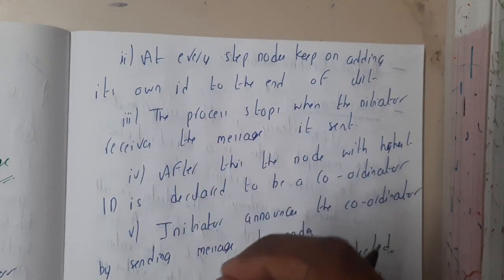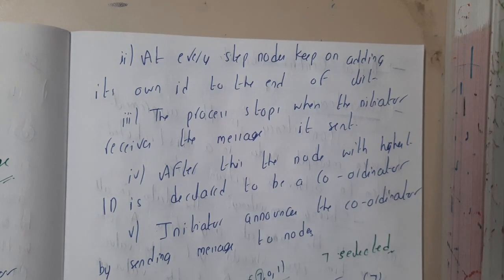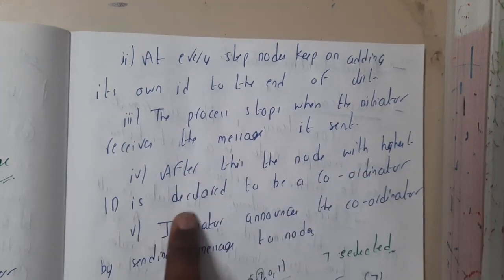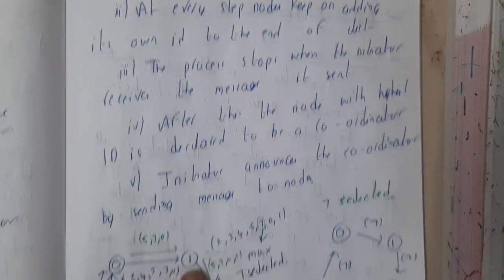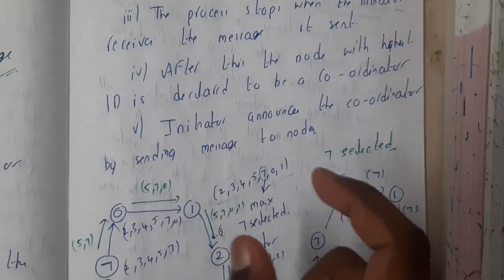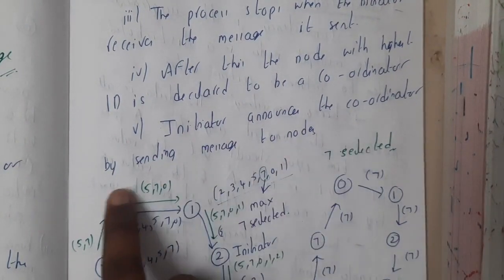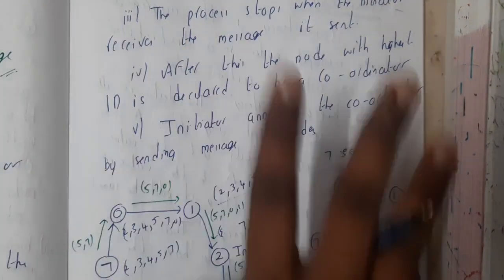Whoever sent it, if they receive it, the process will stop. After this, the node with the highest ID is declared as the coordinator. In the list, whoever has the highest ID will be the leader. The initiator announces the coordinator by sending a message to all the nodes, like how two and five sent to everyone.